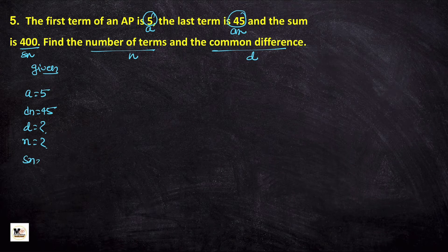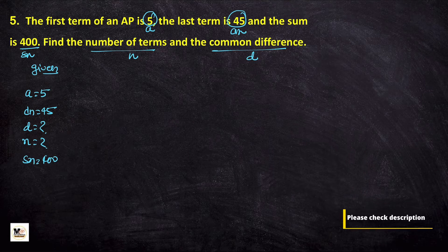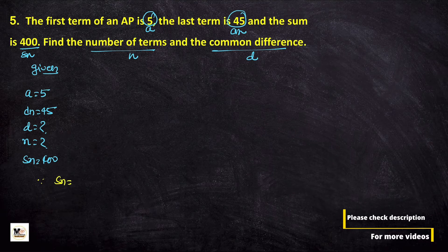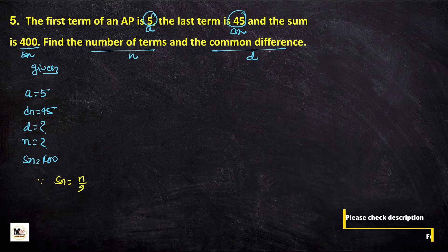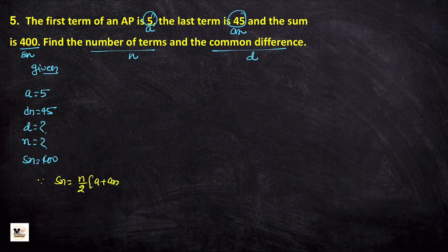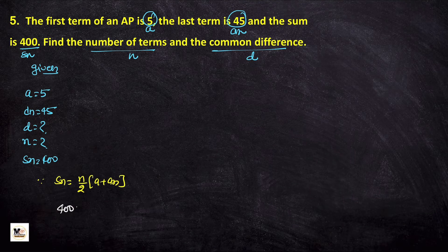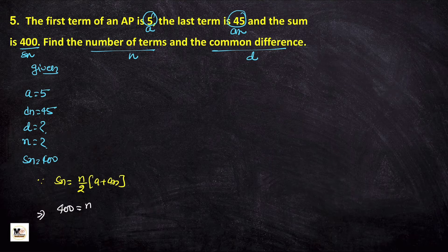Since Sn equals n by 2 times (a plus l), where a is the first term and l is the last term, we can substitute: 400 equals n by 2 times (5 plus 45).